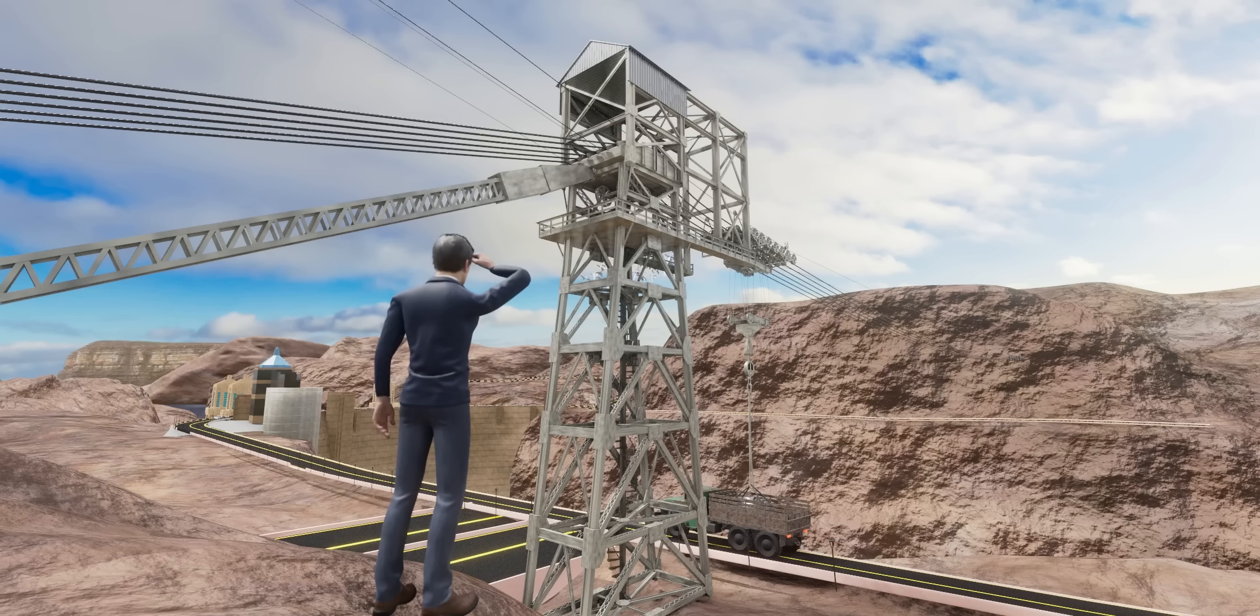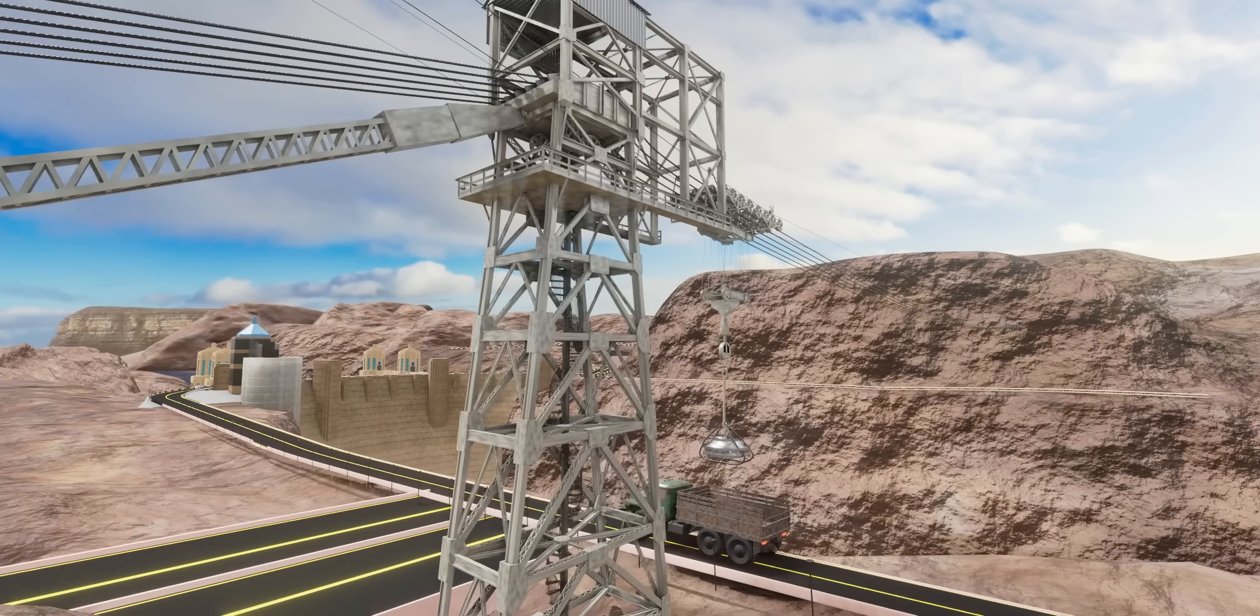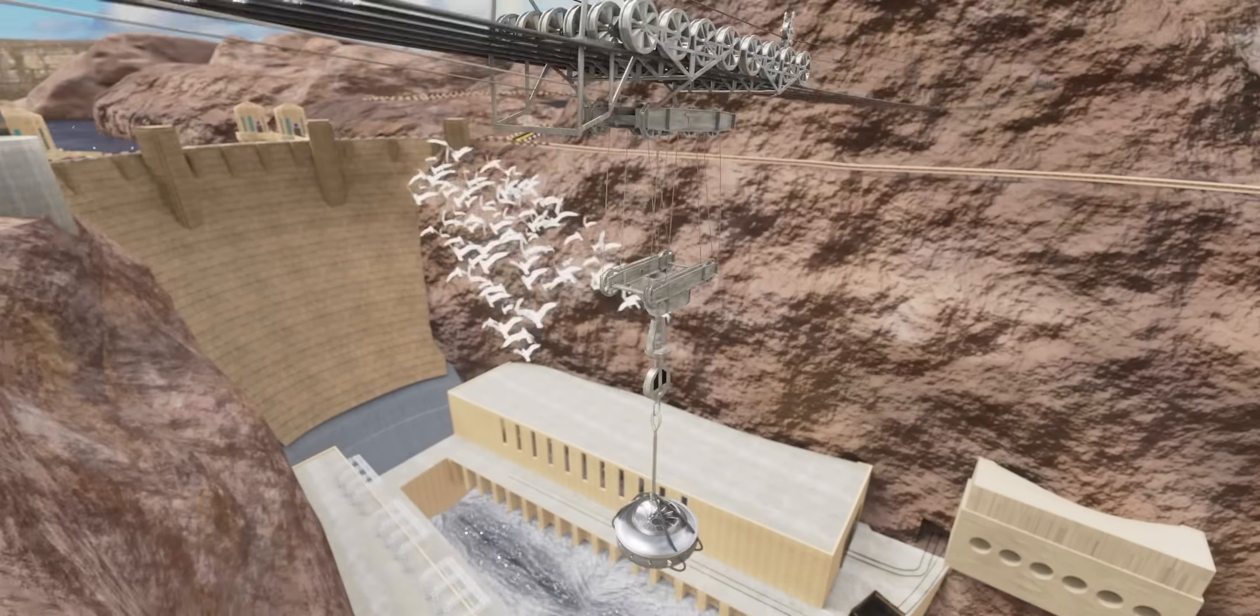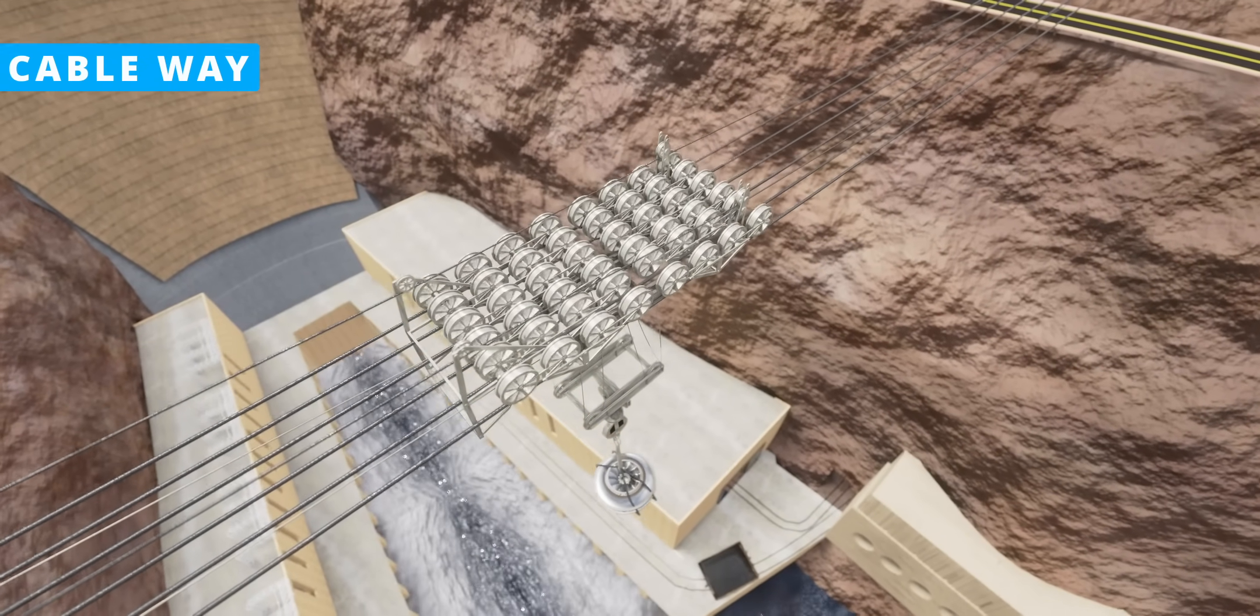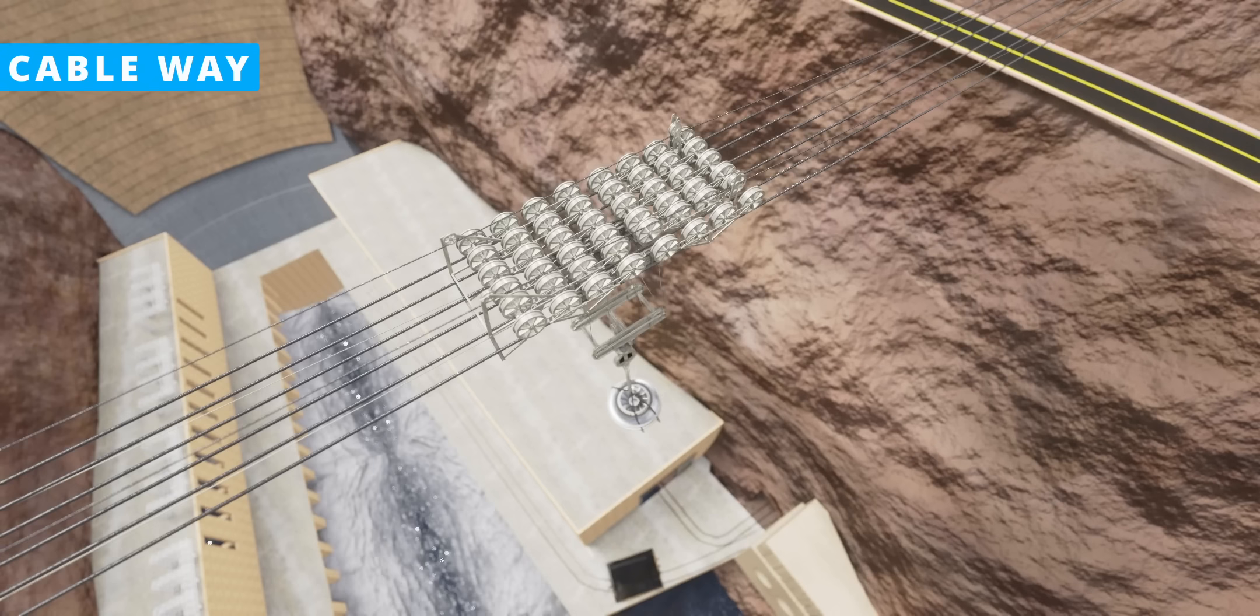If you've ever visited Hoover Dam, you might have noticed a weird-looking tower and pulley cable arrangement. This beautiful machine, a cableway, did the impossible task of installing turbines and generators.